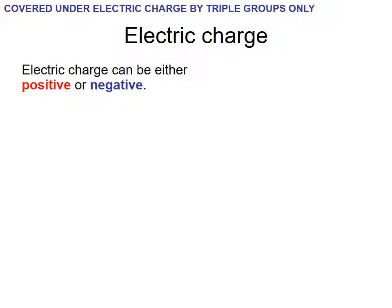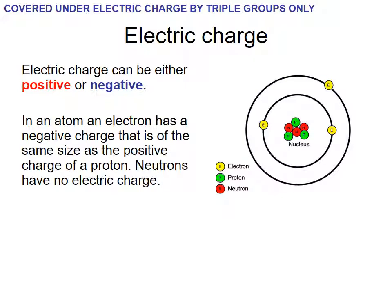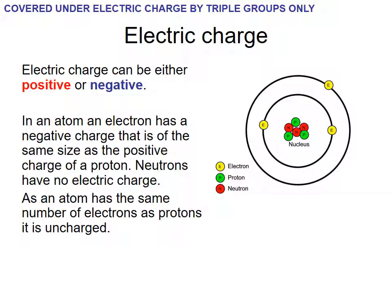Under electrical charge, electric charge can either be positive or negative. In an atom, an electron has a negative charge of the same size as the positive charge. The positive charge of an atom cancels out the negative charge, so atoms are neutral electronically. Neutrons have no electric charge at all, and the number of electrons equals the number of protons.